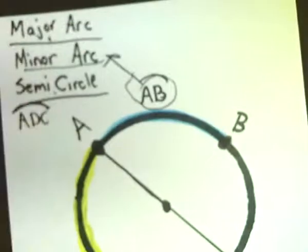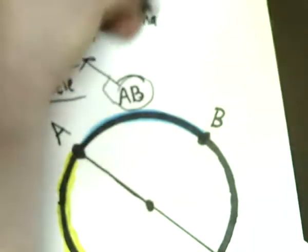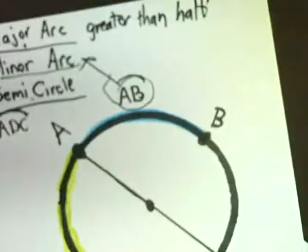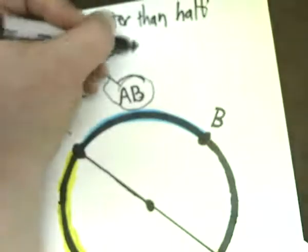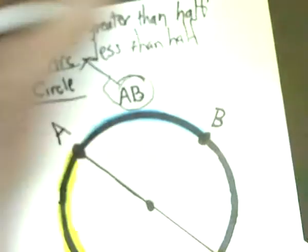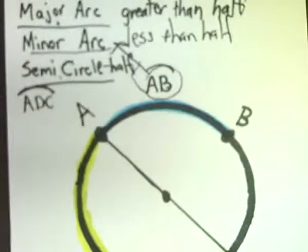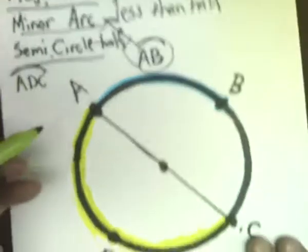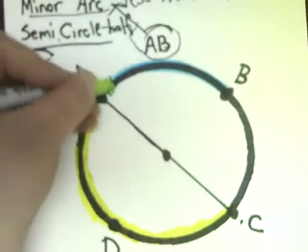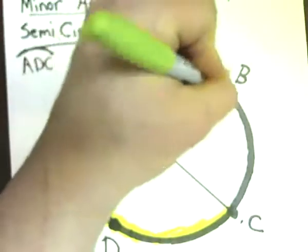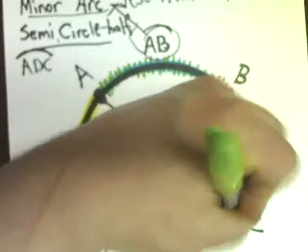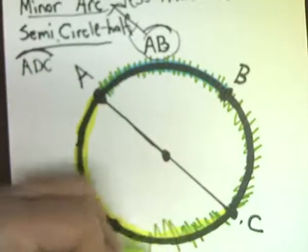And finally, we get to major arcs. Major arcs are greater than half, similar to how the minor was less. And the semi-circle is exactly half. So, what I need to make sure that I do here is find an arc that goes most of the way around, but not quite all the way around, because if you go all the way around, it's not an arc anymore. It's a circle. So, I'm going to go from A all the way past C all the way to D.